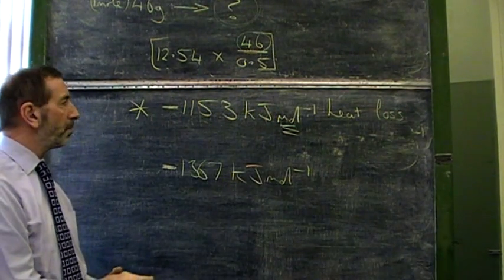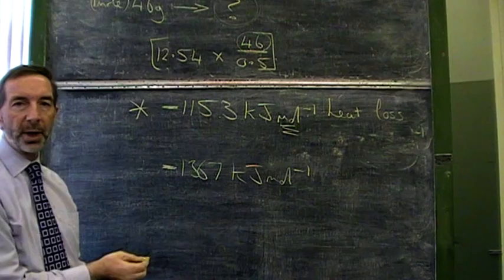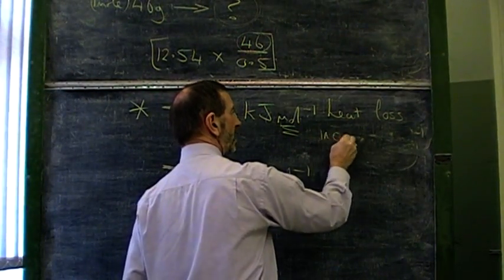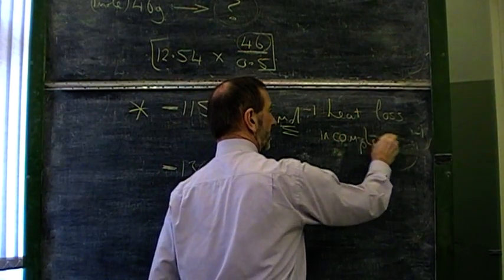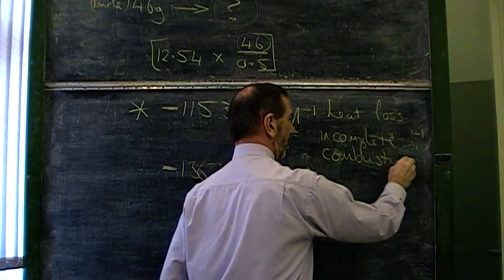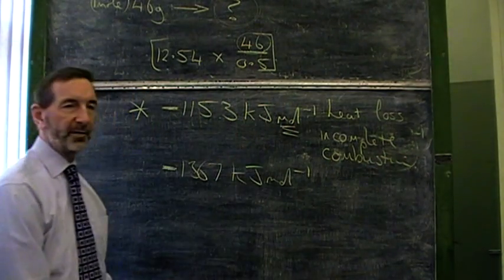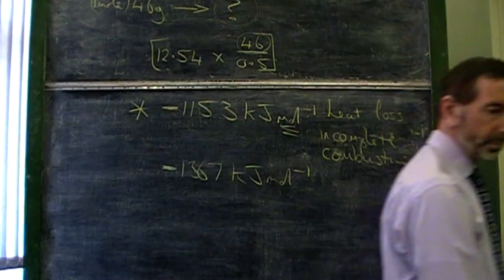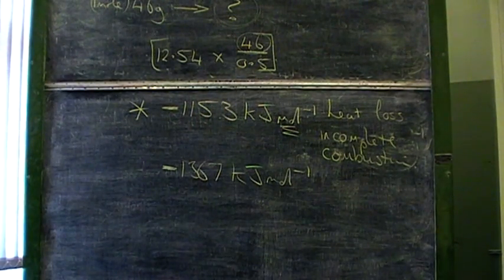So the reason why the value quoted in the data book is higher is because in our experiment there was heat loss and something else: incomplete combustion. Because we're not burning our fuel in pure oxygen, it won't burn thoroughly and the combustion is incomplete. There we have it, enthalpy of combustion.